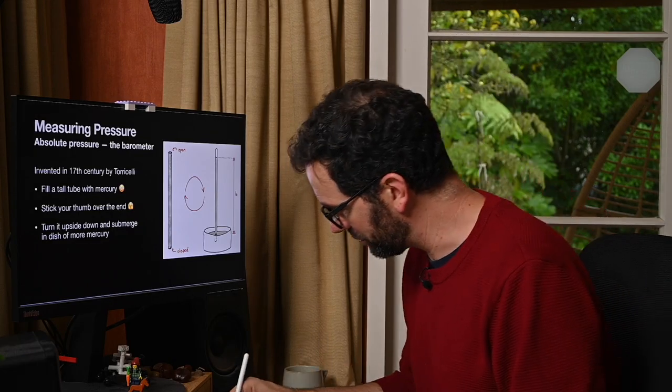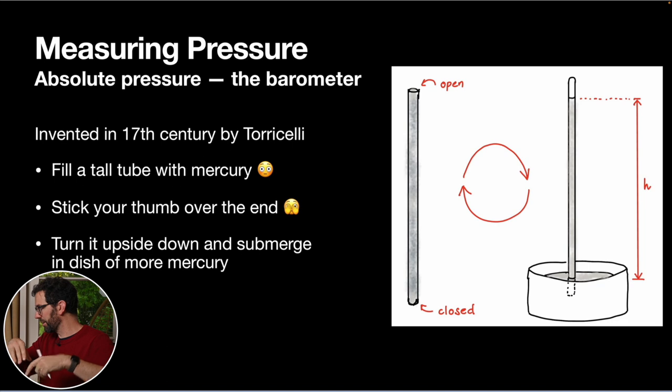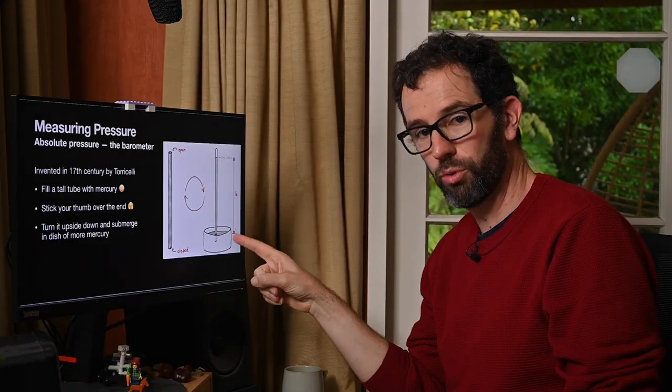The idea is you take a big long test tube type thing, closed at the bottom and open at the top, and you completely fill it with mercury. Then you stick your thumb over the end or seal that end up, flip it upside down, and plunge it into a dish full of more mercury.